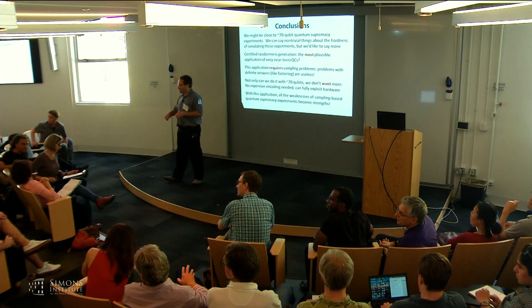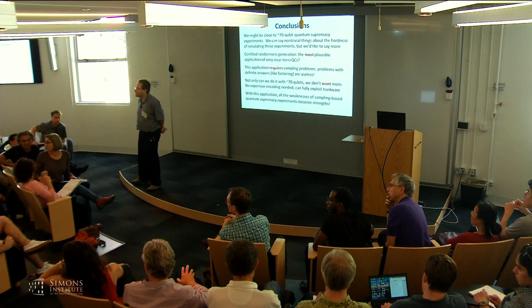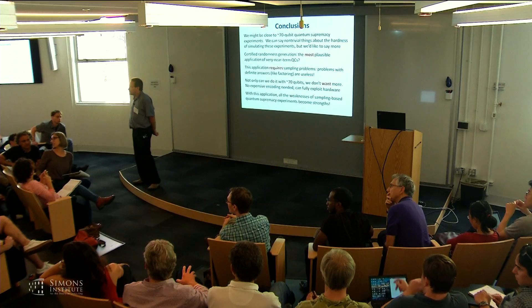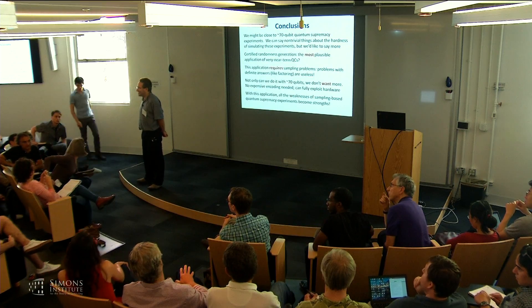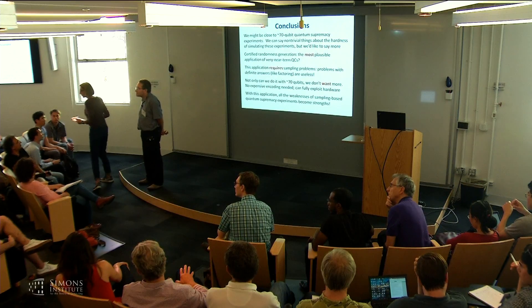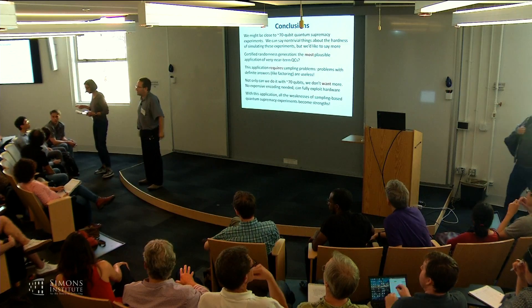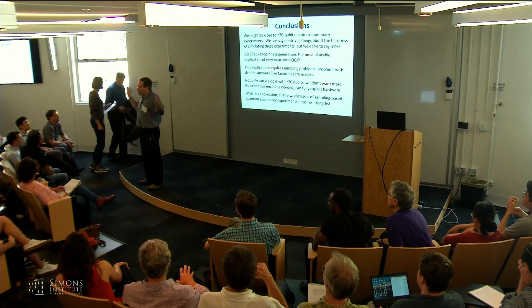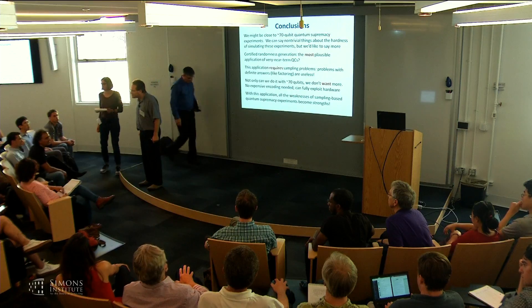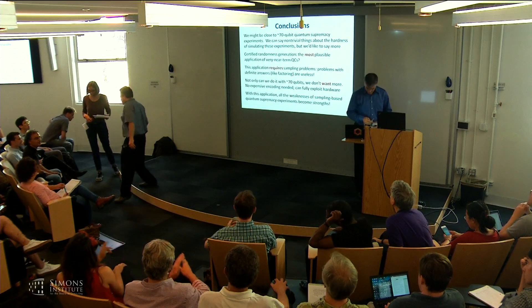The divide-and-conquer algorithm is actually of general interest for evaluating tensor networks rather than just for this application. It suggests a trade-off curve rather than just an alternative among algorithms: you start with the Schrödinger algorithm, and for every halving of memory usage, multiply the running time by a factor of d — d being the depth. We'll save the rest of the discussion for the problem session this afternoon. Thanks, Scott.